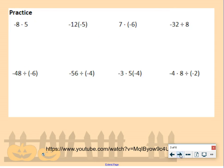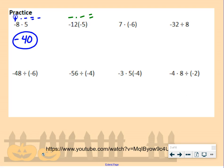Let's do some practice. Negative 8 times 5: we have a negative times a positive, which gives us a negative. So our answer is negative 40. Negative 12 times negative 5: we have a negative times a negative, which gives us a positive. So our answer is positive 60.